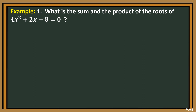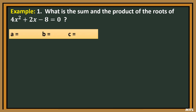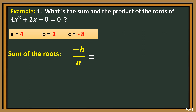First, we're going to identify the value of a, b, and c. So in the given equation, the value of a is 4. Now we're going to solve the sum of the roots, which is negative b over a. By substitution, we will have negative, and the value of b is positive 2, over the value of a, which is positive 4.